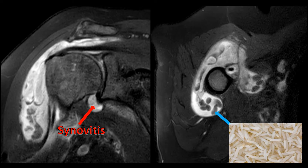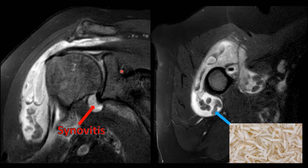We have here coronal and axial images, again fluid-sensitive with fat suppression. We see massive distension of the subdeltoid bursa — the deltoid is here, so it's underneath the deltoid — and subacromial, underneath the acromion, as well as distension of the glenohumeral joint with synovitis at the axillary recess. In the axial images we see the biceps tendon, the humerus, the deltoid, subdeltoid bursa with a lot of fluid, synovitis, and all these bodies that look like rice — this is what's called rice bodies.